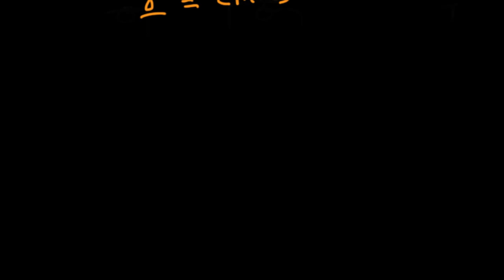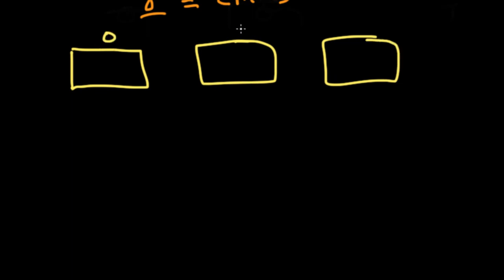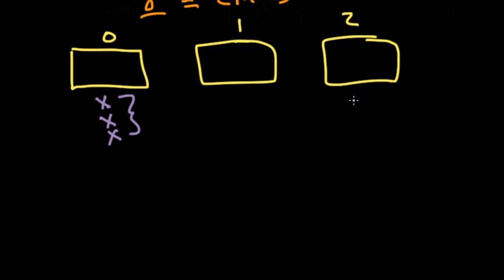So knowing that, let me draw the boxes again: 0, 1, and 2. Since we have five integers, let's think about how we can distribute them into these different boxes. We could have three numbers in one box — however, this is kind of the trivial case. Because if you have three numbers in one box, the sum of those three will always be divisible by 3. Since 0 plus 0 plus 0 is 0 mod 3, 1 plus 1 plus 1 is 3 mod 3, and 2 plus 2 plus 2 is 6 mod 3 — all divisible by 3.